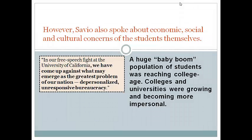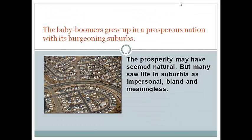However, Savio also spoke about the economic, social, and cultural concerns of the students themselves. This huge baby boom wave of students was just starting to flood into colleges and universities. Notice the part of Savio's speech in bold type here — this theme was one that many of these students responded to with passion. The baby boomers grew up in a prosperous nation with its burgeoning suburbs. Students from middle-class families were used to a fairly comfortable style of life, but many also resented what they saw as the bland and stifling culture of the 1950s.